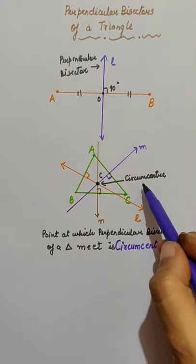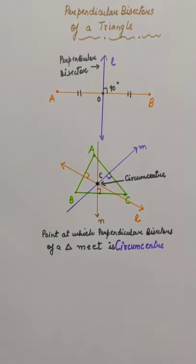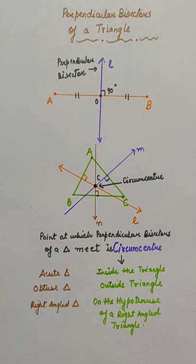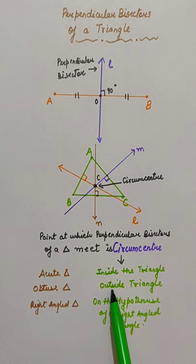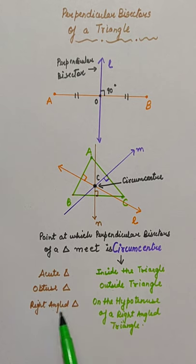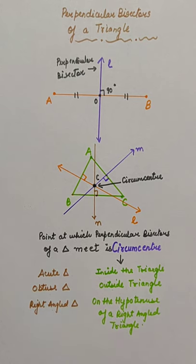Does this circumcenter always lie inside the circle? No, it depends on the type of the triangle. For acute triangle it lies inside the triangle, for obtuse it lies outside, and for right angle triangle it lies on the hypotenuse. So it's simple.